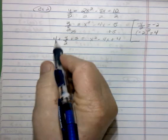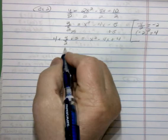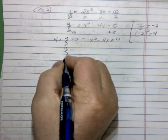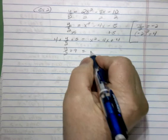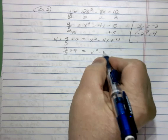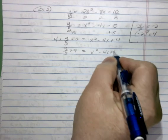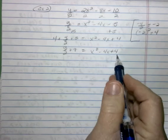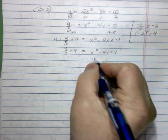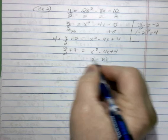So on the left side, our like terms, 4 and 5, we're going to combine. So y over 2 plus 4 and 5 gives us 9. And then we have x squared minus 4x plus 4. We're going to factor that trinomial, that's going to be x minus 2 squared.